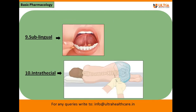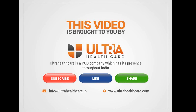Eighth is the inhalation route, used for drugs in gaseous, volatile, or aerosol form. Ninth is the sublingual route, where the drug is administered under the tongue. Tenth is the intrathecal route, where the drug is administered between two vertebrae in the lower spine, into the space around the spinal cord. These are the various routes by which drugs can be administered into the body.